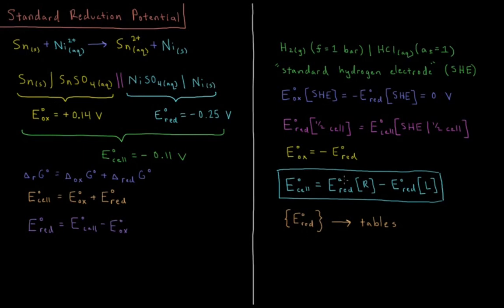The standard reduction potentials exist in tables — in textbook appendices and online. Once you know the two half cells, look up the standard reduction potential of each, flip the sign for the one at the anode, and add them together to get the EMF of the cell. For nickel 2+ reduced to nickel, the standard reduction potential is −0.25 V; for tin 2+ reduced to tin, it is −0.14 V, so the oxidation potential is +0.14 V. Adding these gives −0.11 volts for the standard EMF of this reaction.